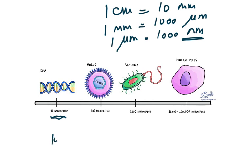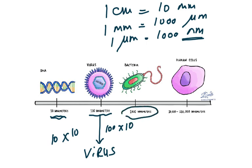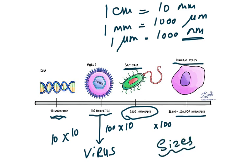10 nanometers × 10 = 100 nanometers, which is a virus — for example, the coronavirus is about 100 nanometers. Multiply by 10 again: 1000 nanometers is a bacterium. So a virus is 10 times smaller than a bacterium. The human cell is 100,000 nanometers — 100 times bigger than a bacterium and 1000 times bigger than a virus. I want you to understand these sizes clearly, because getting these concepts wrong causes mistakes in later chapters.